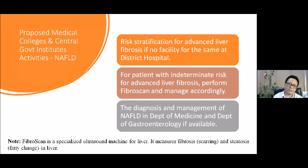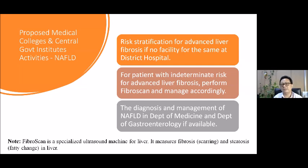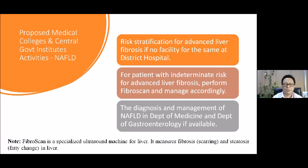Up to the district hospital level, care is within the domain of the National Health Mission. But care does not stop there — the next level is medical colleges and central government institutes, where more definitive care of NAFLD will happen. This includes further risk stratification of advanced liver fibrosis and FIB-4 scan for patients with intermediate risk. If the district hospital does not have these facilities, the state can build capacity at the medical college instead. The choice of which facility to develop for NAFLD diagnosis and management is with the state government. It is usually done in the gastroenterology department, or the medicine department if gastroenterology is not available.